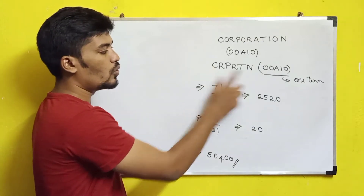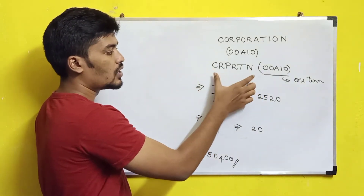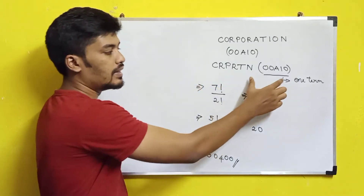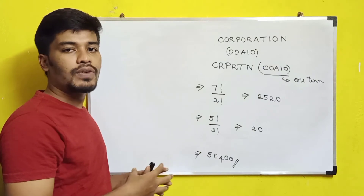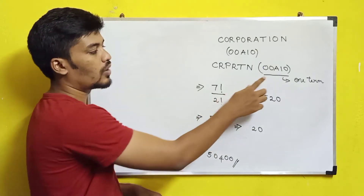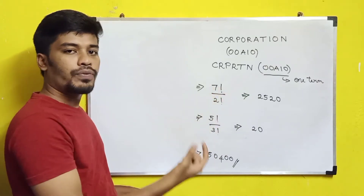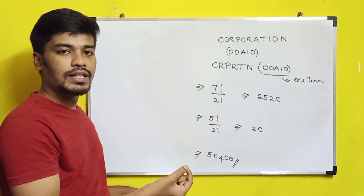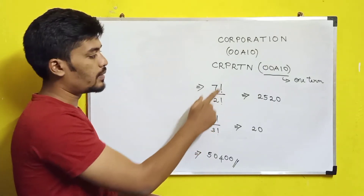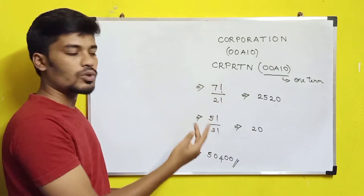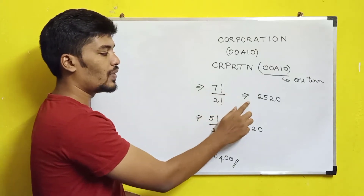Counting the consonants: 1, 2, 3, 4, 5, 6 — six consonants — plus the vowel group as a single term gives seven items total. The number of ways to arrange these seven items is 7!, divided by 2! because R is repeated twice. Solving this gives 2520.